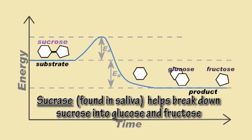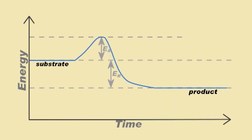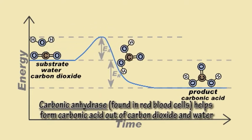For example, the enzyme sucrase lowers the activation energy required to break down sucrose into fructose and glucose. And the enzyme carbonic anhydrase lowers the activation energy required for the formation of carbonic acid out of carbon dioxide and water.